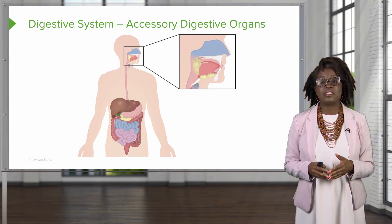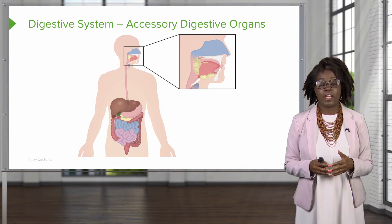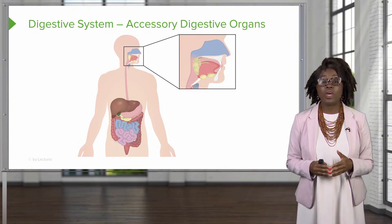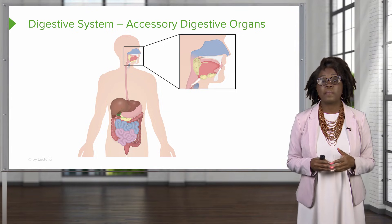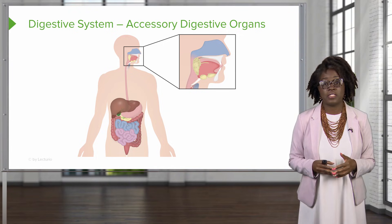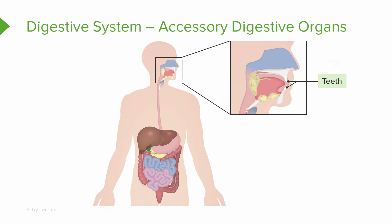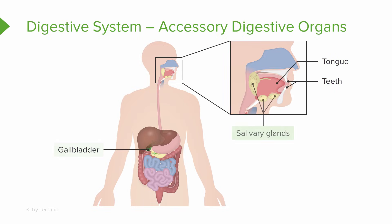Along with the organs of the GI tract or the alimentary canal, we also have some accessory digestive organs that play an important part in digestion. These include the teeth, the tongue, the gallbladder, the digestive glands, which are going to produce secretions that help break down food stuff, including the salivary gland, the liver, and the pancreas.